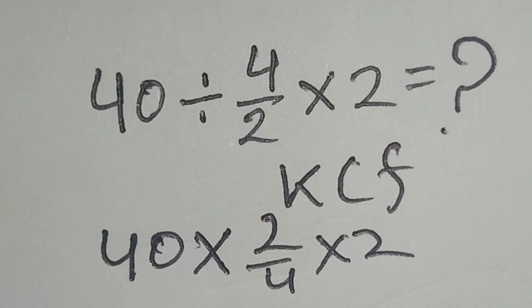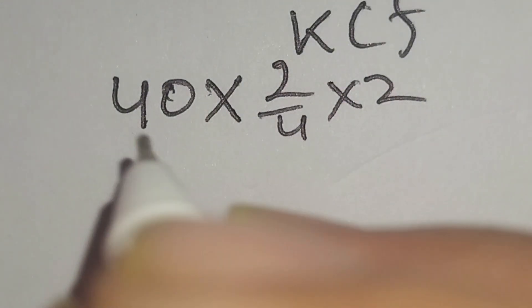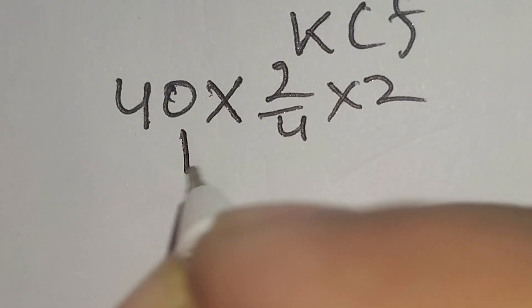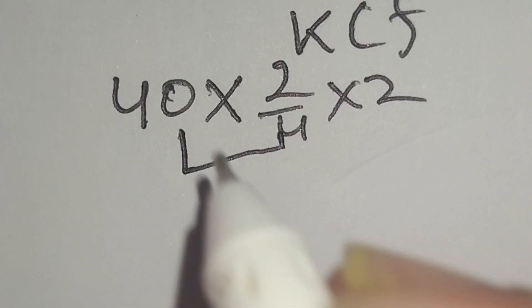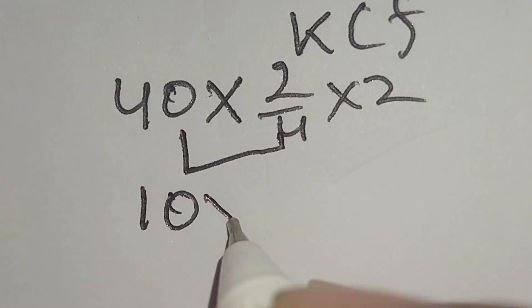Here, this 40 multiply this 2 over 4 gives us... here 40 over 4 gives us 10, multiply this 2, multiply this 2.